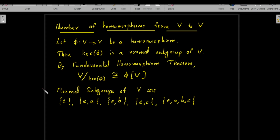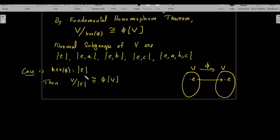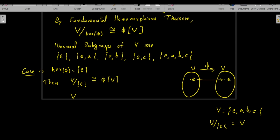Case 1: kernel of φ = {e}. This means e is the only element in V mapped to the identity element e in V under φ. By the Fundamental Homomorphism Theorem, V over {e} is isomorphic to φ(V). The coset space V over {e} is isomorphic to V itself, since V = {e,a,b,c} and V/{e} contains cosets e·{e}, a·{e}, b·{e}, c·{e}, which is essentially V. Therefore V is isomorphic to φ(V).